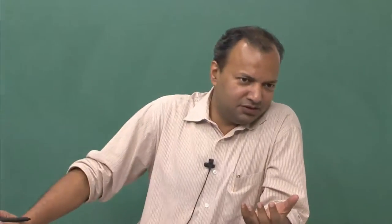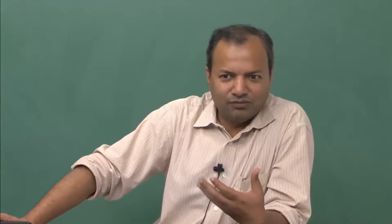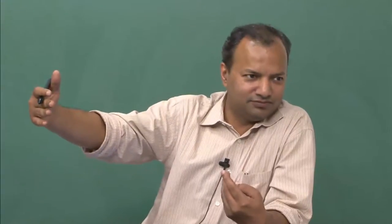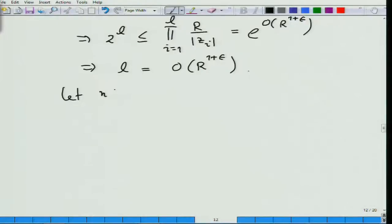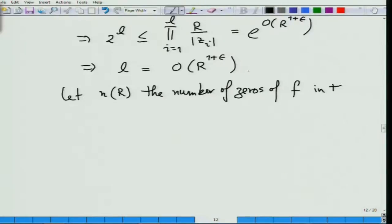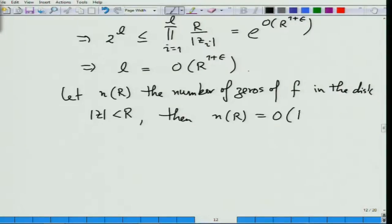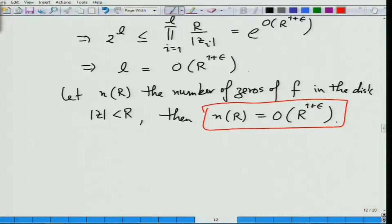Since r was arbitrary, this gives a bound on the number of roots of f up to any given value. If we denote by n(r) the number of zeros of f with |z| ≤ r, then n(r) = O(r^(1+ε)). This is a very interesting conclusion from the fact that f is an entire function of order 1.